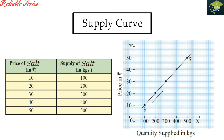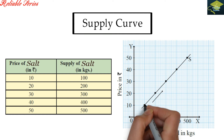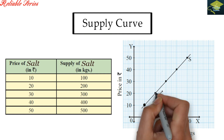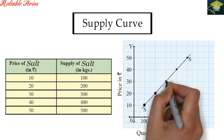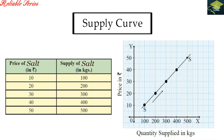अपने table को ध्यान में रखते हुए, x-axis पर रखते हैं 100, 200, 300, 400, और 500 kg. y-axis पर रखते हैं 10, 20, 30, 40, और 50. तो जब price 10 था तो quantity supplied 100 kg थी, जब price 20 हुआ तो 200 kg, 30 पे 300, 40 पे 400, और 50 पे 500. इन price और quantity supplied के combinations से supply curve derive होता है, जो बताता है कि there is a direct relationship between price and quantity supplied.